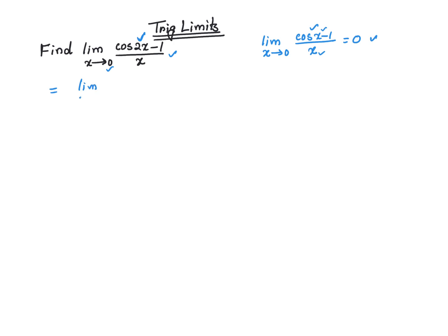So, limit x approaches 0. I'm going to multiply the numerator by 2, which is 2 times cosine of 2x minus 1, and multiply the denominator by 2. That's going to give me 2x.